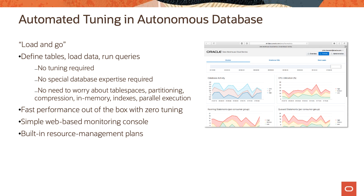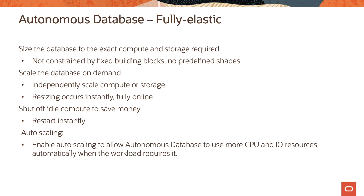Autonomous database has built-in resource management plans and is fully elastic. Customers can size the database to the exact compute and storage required without being constrained by fixed building blocks or predefined shapes. They can scale the database on demand, independently scaling compute or storage. Resizing operations occur instantly with the database fully online and no downtime. Customers can shut off idle compute to save money, restart instantly when needed, and enable auto scaling to allow autonomous database to use more CPU and IO resources automatically when the workload requires it.